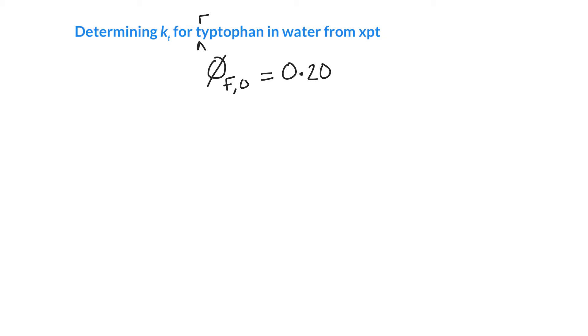And I've just noticed that I've left the R out on tryptophan. And it also has a lifetime in the absence of a quencher of 2.6 nanoseconds. So within 2.6 nanoseconds, 1 over e of the excited state is remaining. And so that gives us enough information to find kF.